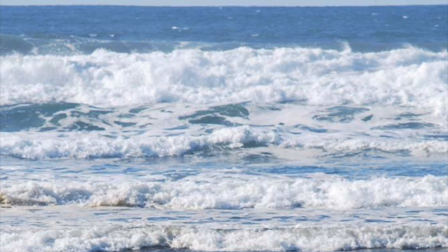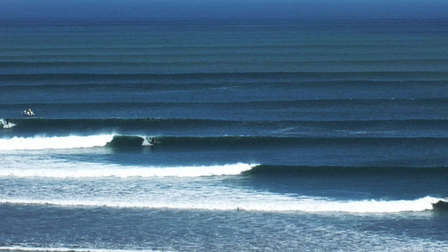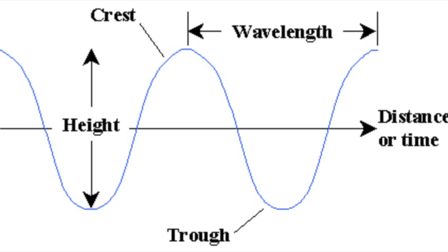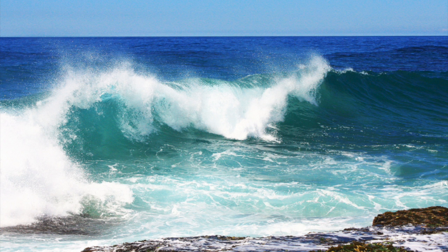Waves originate in a sea area. A swell describes waves that have traveled out of their area of origination and exhibit a uniform and symmetrical shape. The amount of energy in a wave depends on its height and wavelength, as well as the distance over which it breaks.